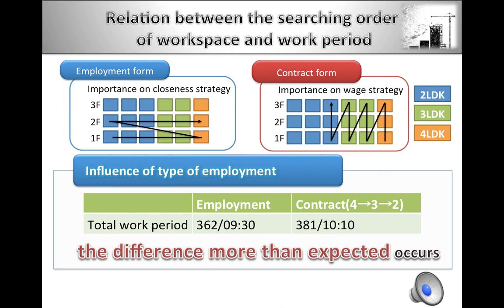Here, I would like to explain the results we got. We consider two ways to search work floor in different employment forms. As a result of simulation, total work period could be reduced greatly when we take strategies that consider closeness as important when searching workers' workplace. This result shows that the searching order of workspace will affect the work period. Based on the result, we could decide how to arrange the work process in the future.